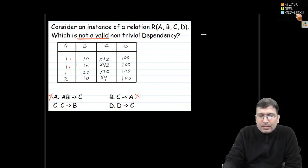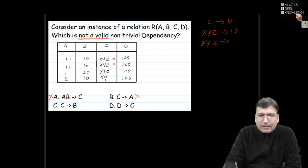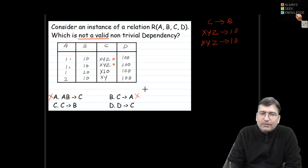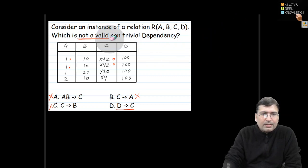Checking C implies B: XYZ in C has value 10 for B in the first row. The next occurrence of XYZ also gives 10 — same mapping, no problem. This also holds good and is a wrong answer. So the right answer will be D.